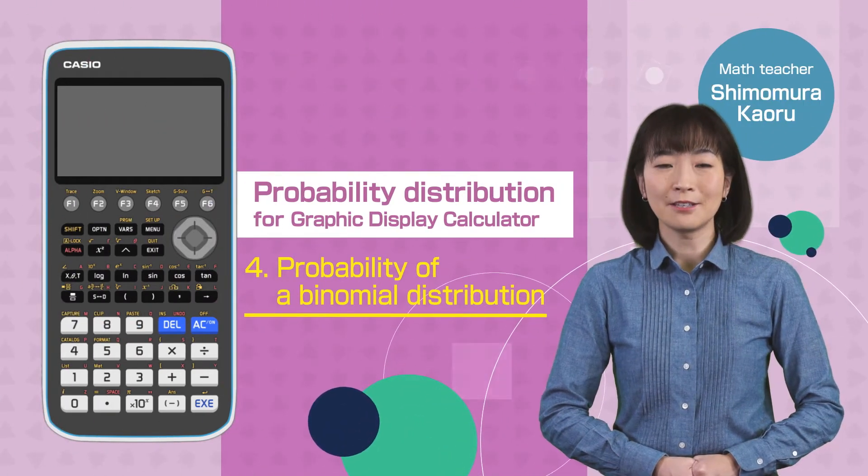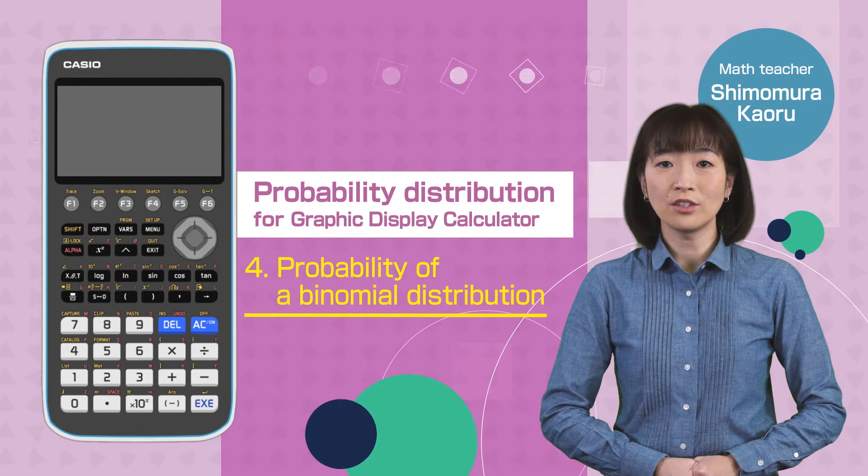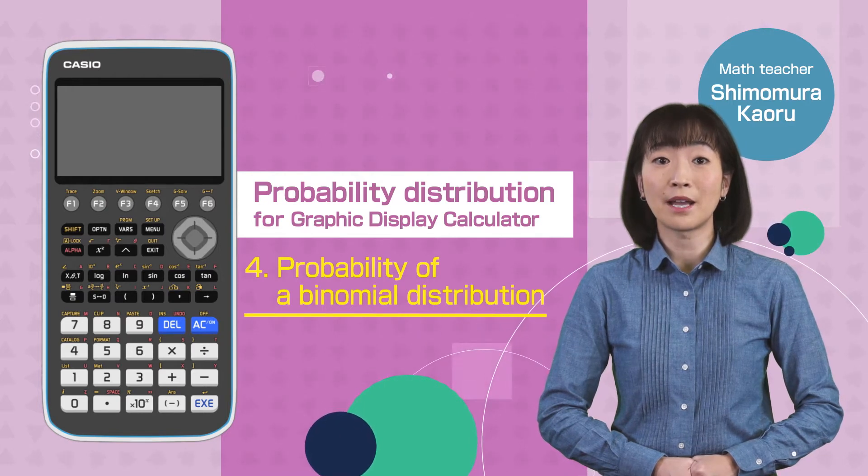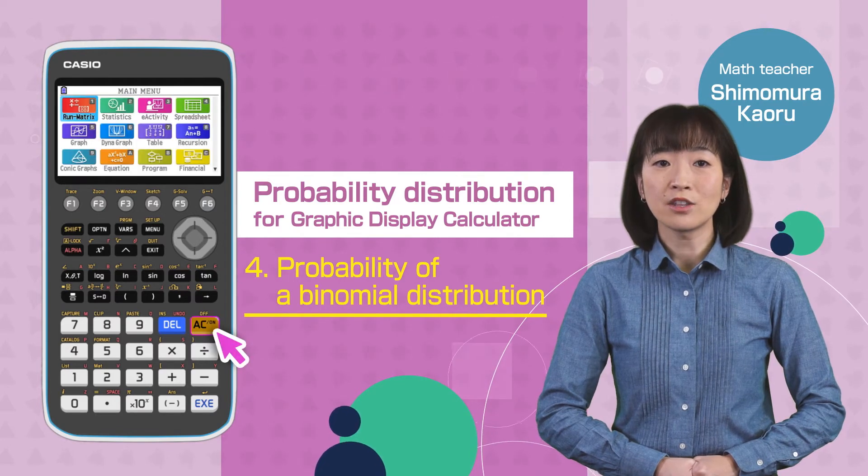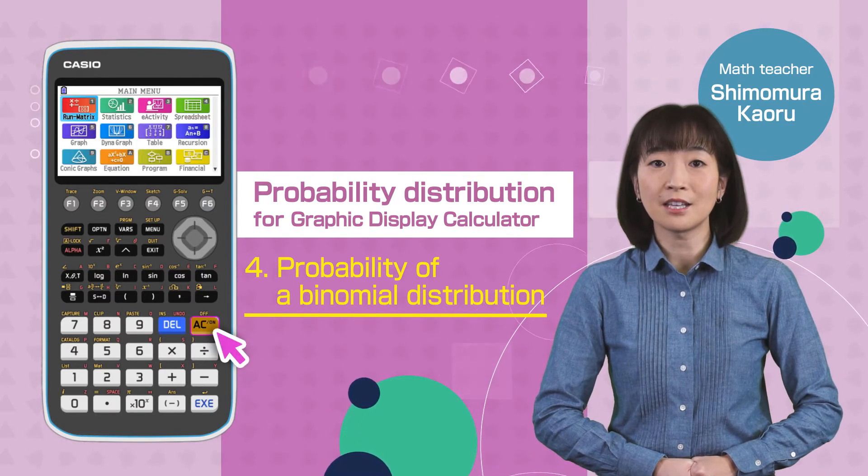Hi everyone! In this video, we are going to show how to calculate the probability of a binomial distribution using the Casio FX-CZ50. Switch on your calculator, pressing the AC button.